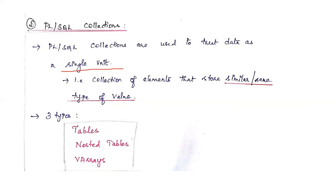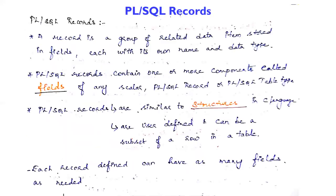To summarize the outline: there are two data types — scalar and composite. Composite has two types: records and collections. Collections include tables, nested tables, and VARRAYs. In today's class, we are going to discuss records. A PL/SQL record is a group of related data items stored in fields, where each field has a name and an associated data type.